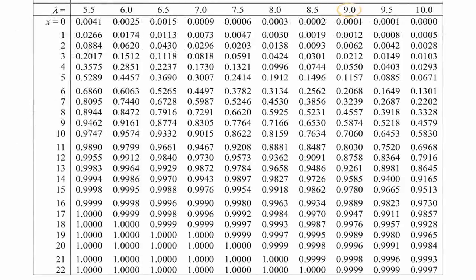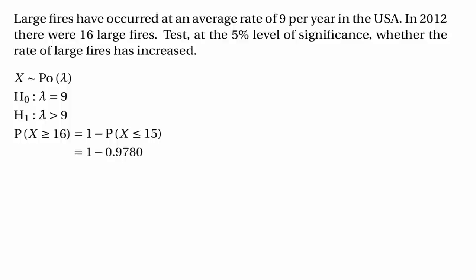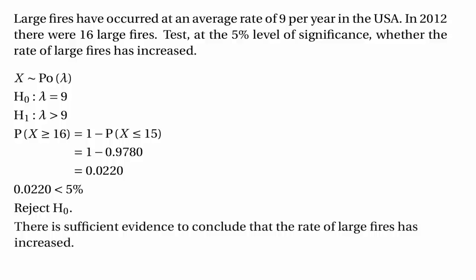If we find where lambda equals 9 and look along the row where x equals 15, we see the probability 0.9780. So the probability we want is 1 minus 0.9780, which equals 0.0220. That's a lot less than 5%, the level of significance, so we reject H0. If lambda were equal to 9, the probability of getting 16 or more large fires would be tiny — so small that we don't believe the null hypothesis. We reject it and conclude there is sufficient evidence that the rate of large fires has increased.